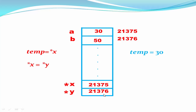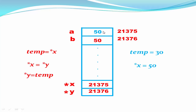Next we write the statement star x equal to star y. Star y indicates the value stored in memory location 21376, which is 50, which is copied to star x. So now star x contains 50 — star x indicates the value stored in memory location 21375, so now a contains the value 50. Then star y equal to temp. Temp contains 30, which is copied to star y. Star y indicates the value stored in memory location 21376, so now b contains 30. You can see the values have been swapped.